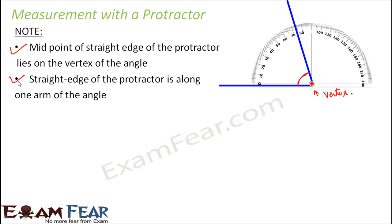The second point to remember is that the straight edge of the protractor must lie along one arm of the angle. One arm of the angle should be along the base line — that is, the straight edge — of the protractor. If you do not place the protractor correctly, the measurement you get will also be incorrect. So remember: midpoint on the vertex, and straight edge along the arm of the angle.